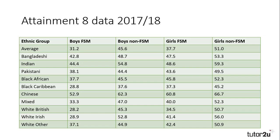It is noticeable, however, that the gap is lessened between those on free school meals and those not for some ethnic groups. For example, for Bangladeshi students the gap is only 6 points; for white other — usually white European students — it's 8; for Indian and Chinese students it's 10, whilst the gap is greatest for white British and white Irish.